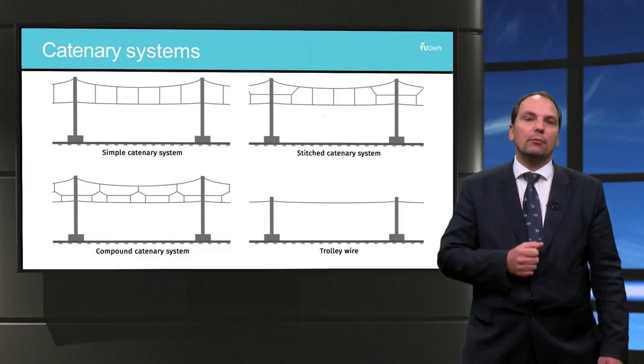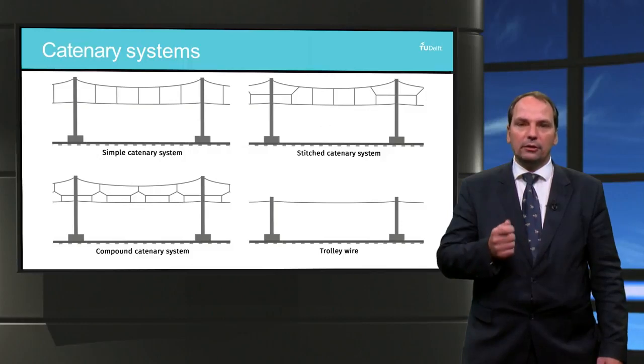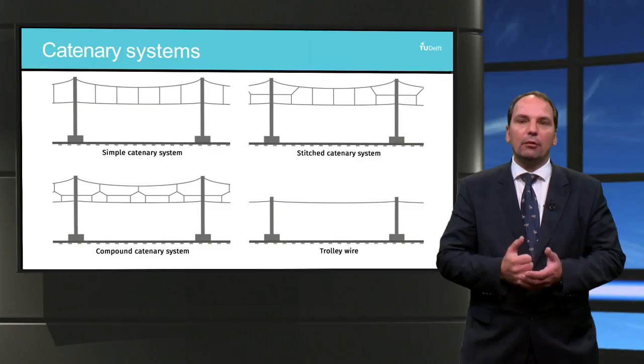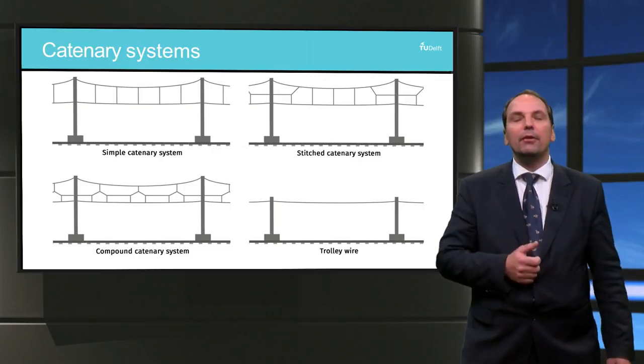The reason for this more sophisticated design is to decrease the variations in stiffness along the length. When the speed of the train increases, this becomes more important as more sophisticated designs are required, as can be seen in the figures.